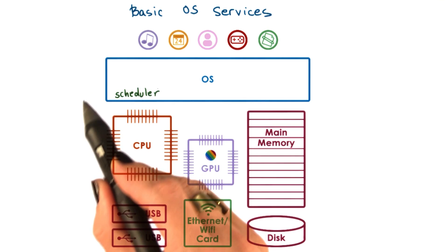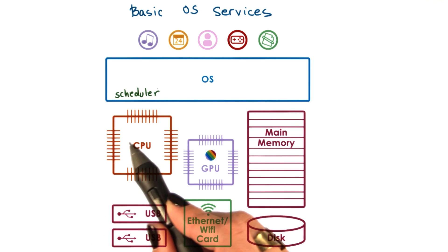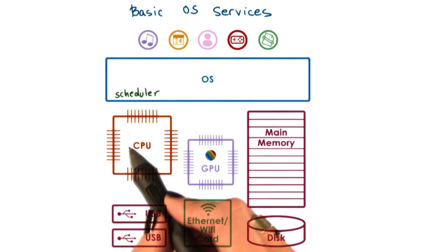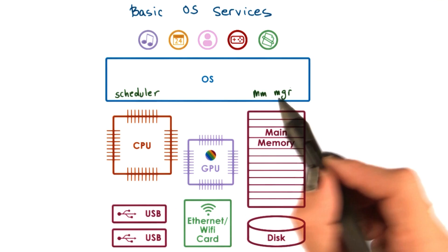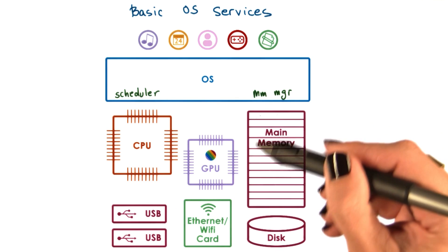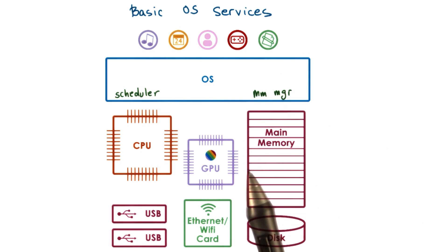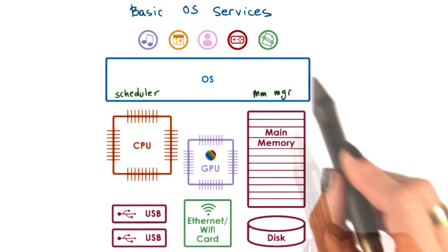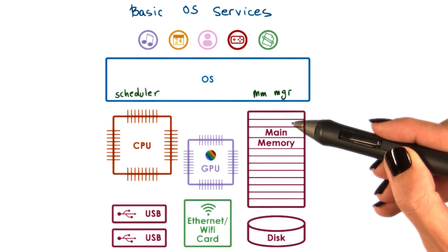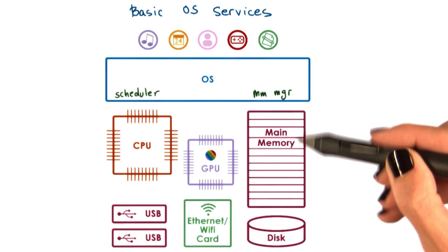For instance, there is a scheduling component that's responsible for controlling the access to the CPU, or maybe there are even multiple CPUs. The memory manager is responsible for allocating the underlying physical memory to one or more running applications, and it also has to make sure that multiple applications don't overwrite each other's accesses to memory.